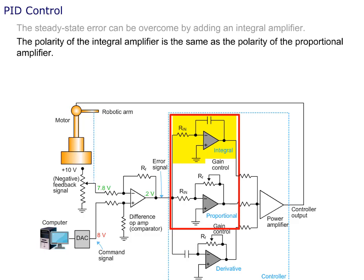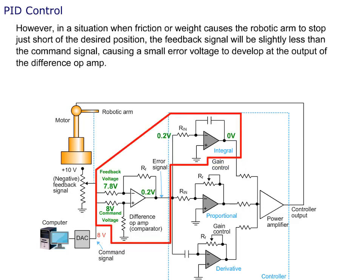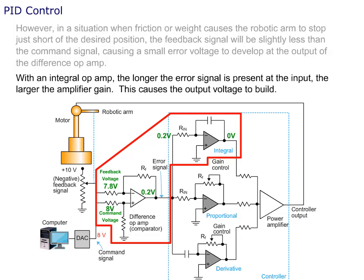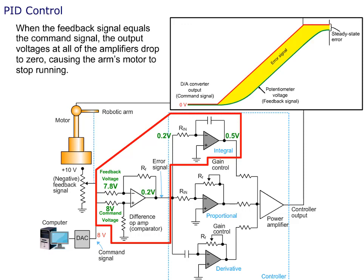The steady-state error can be overcome by adding the integral amplifier. The polarity of the integral amplifier is the same as the polarity of the proportional amplifier. Whenever there is no error signal — which is when the feedback signal and the command signal voltages are equal — the output voltage of the integral amplifier is zero. However, in a situation when friction or weight causes the robotic arm to stop just short of the desired position, the feedback signal will be slightly less than the command signal, causing a small error voltage to develop at the output of the difference op amp. With an integral op amp, the longer the error signal is present at the input, the larger the amplifier gain, causing the output voltage to build. Eventually, the output of the integral amplifier increases, which is further amplified by the power amp. When this voltage becomes large enough, it causes the motor to overcome the weight of the robotic arm and its load, along with friction, and moves the arm the rest of the way to the desired position. When the feedback signal equals the command signal, the output voltages at all of the amplifiers drop to zero, causing the arm's motor to stop running.